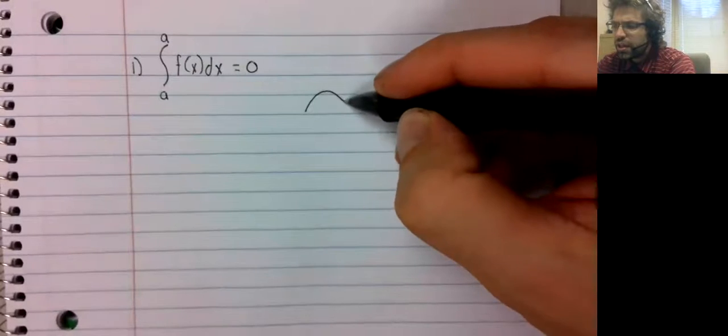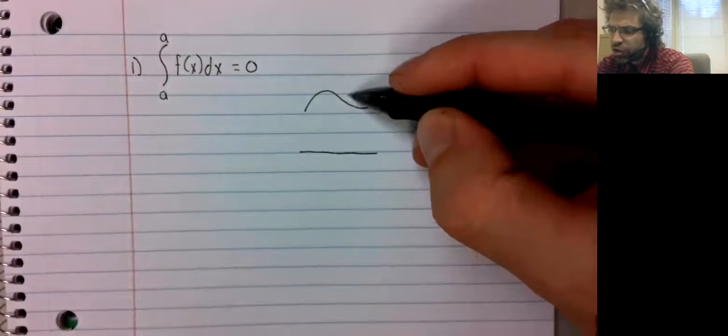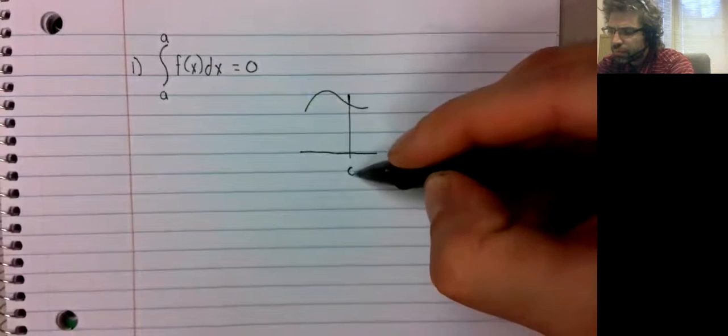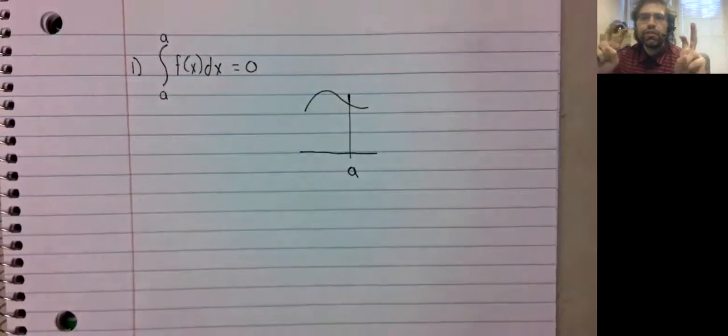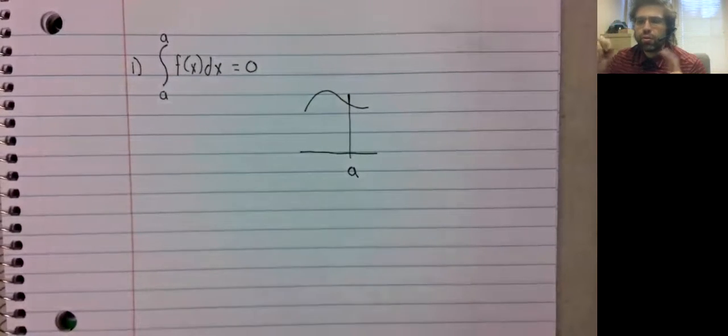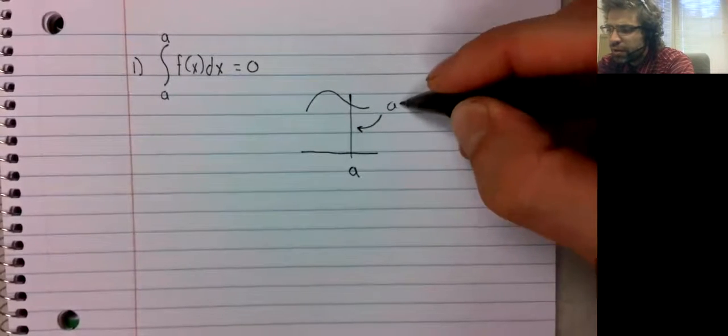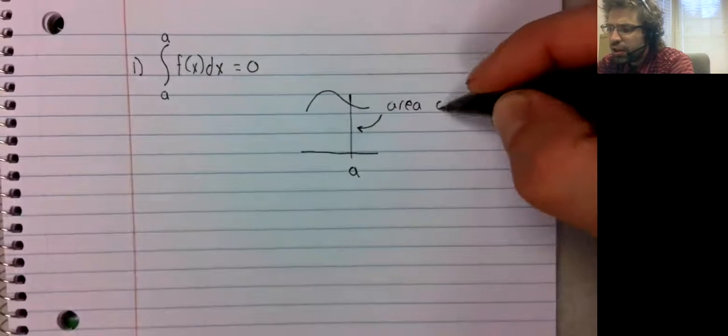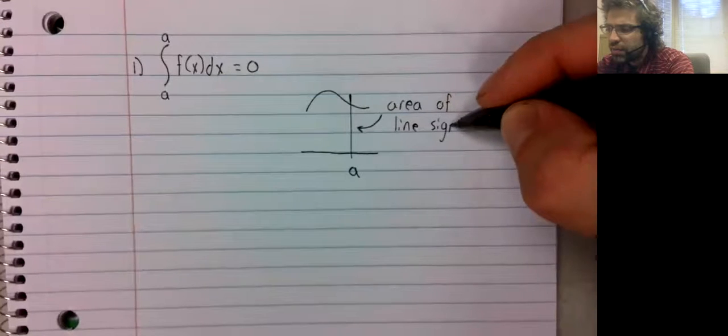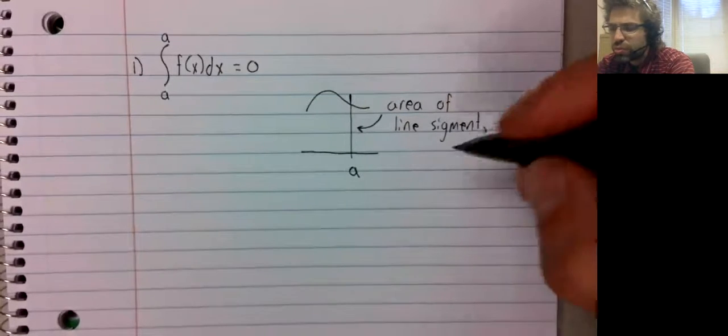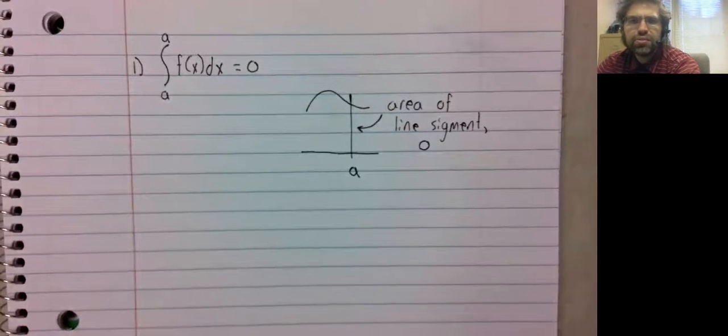As a justification for this, suppose we have a function, and here's a. The area under the curve from a to a is just the area of this line segment, and the area of a line is zero.